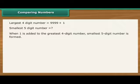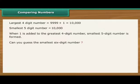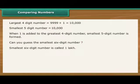Let us find out. On adding 1 to 9999, we get 10,000, which is smallest five-digit number. Can you guess the smallest six-digit number? Smallest six-digit number is 1 lakh.